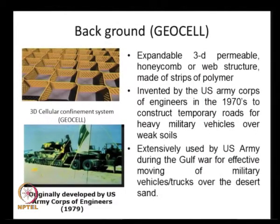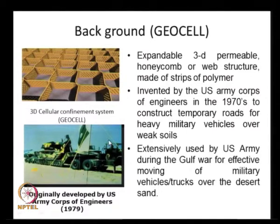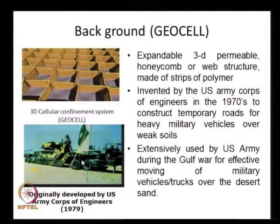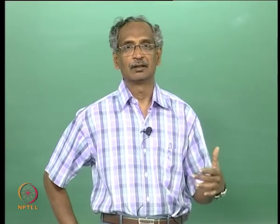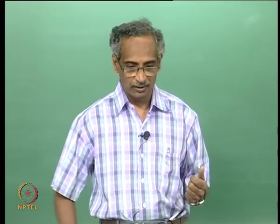Geocells are three-dimensional permeable honeycomb structures made of strips of polymer. They were originally invented by the US Army Corps of Engineers in the 1970s, mainly to construct temporary access roads in forward areas like desert and soft clay areas. During the Gulf War, the US Army extensively utilized geocells not only for constructing pavements, but also to build temporary shelters, tank barriers, and other structures in very innovative manners.